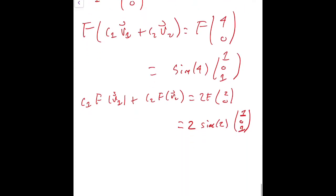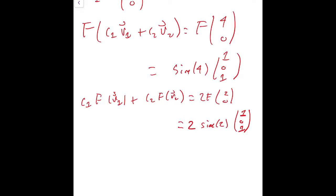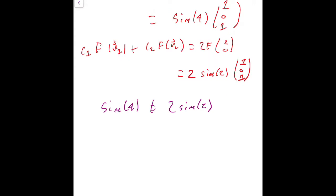Now, what I need to show you here is that these two things are not equal. So, sine of 4 is not equal to 2 times sine of 2. Why not? Well, we can think about it this way. So 0 is less than or equal to 2, and that's less than or equal to pi. So sine of 2 is greater than 0. But pi is less than or equal to 4, and this is less than or equal to 2 pi. So sine of 4 is less than 0. So there's no way that sine of 4 can be equal to 2 sine of 2.